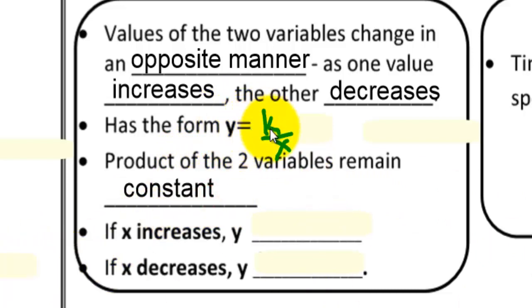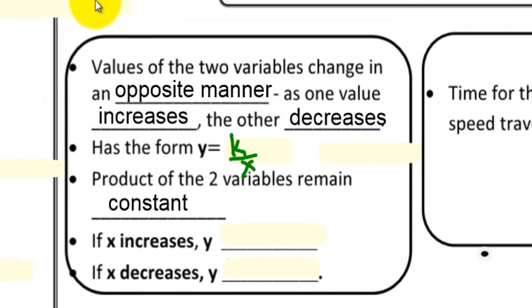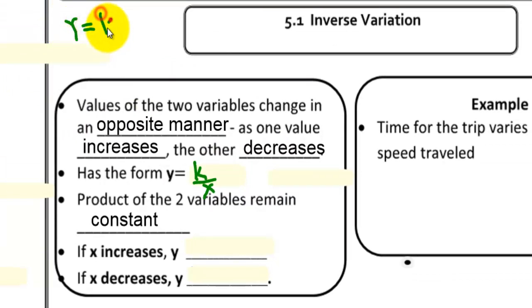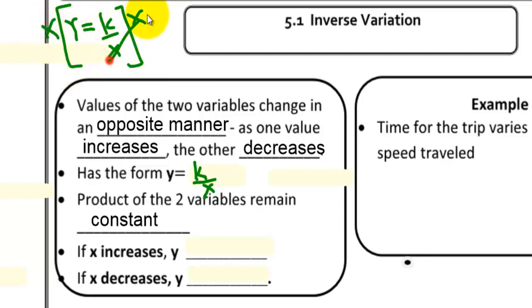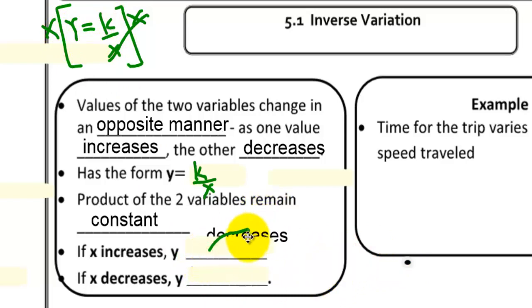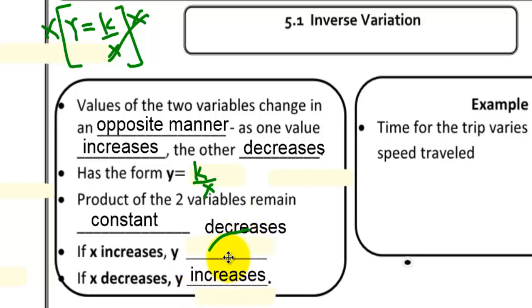It means that from this equation, y equals k over x. When you solve for k, you multiply both sides by x. So x will cancel out and you will have k equals x times y. So the product of x and y will always be equal to k. If x increases, then y decreases. If x decreases, y increases.